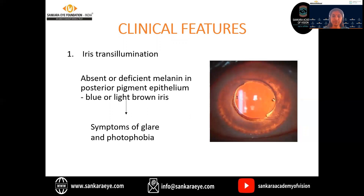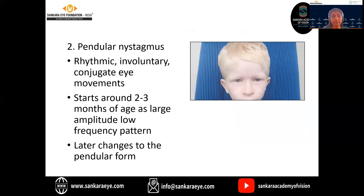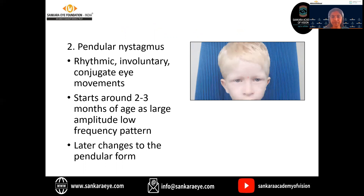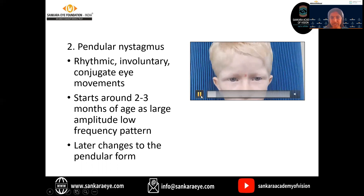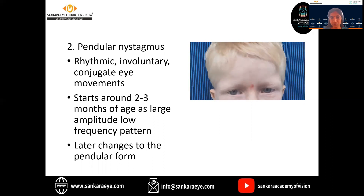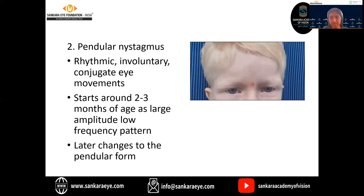Coming to the clinical features in albinism. First comes the iris transillumination defects, which are very classical in these children. It is mainly due to the absent or deficient melanin in the posterior pigment epithelium, which will lead to a blue or light brown iris. Because of this, symptoms of glare and photophobia develop. Then the pendular nystagmus — there will be a rhythmic involuntary conjugate eye movements. It starts at around two to three months of age as large amplitude nystagmus, which slowly turns into a pendular pattern with time. In this video, you can see the horizontal involuntary conjugate eye movements and the pendular movements.